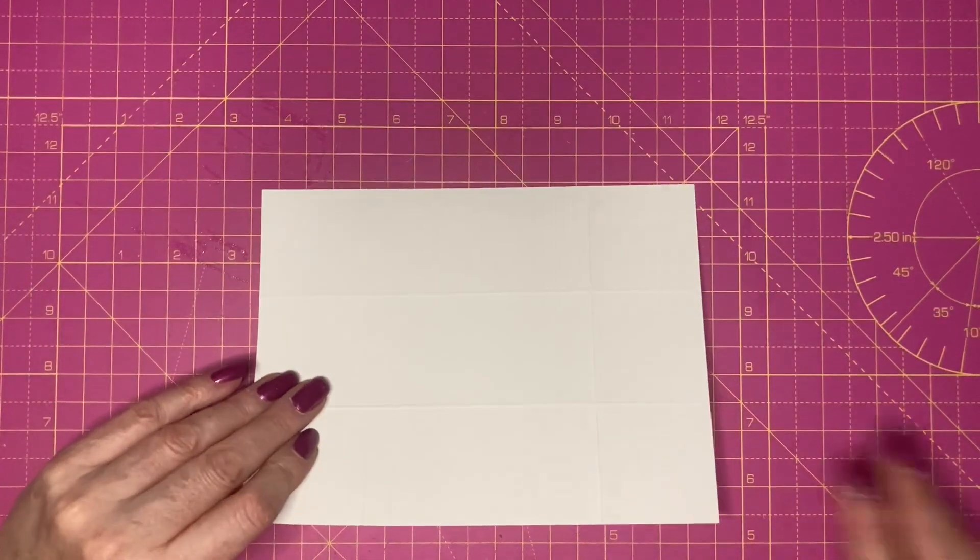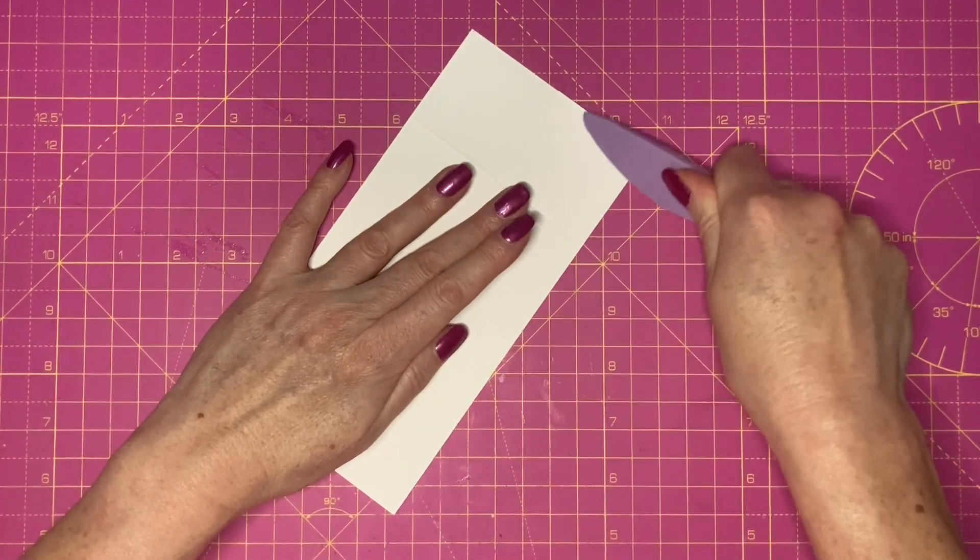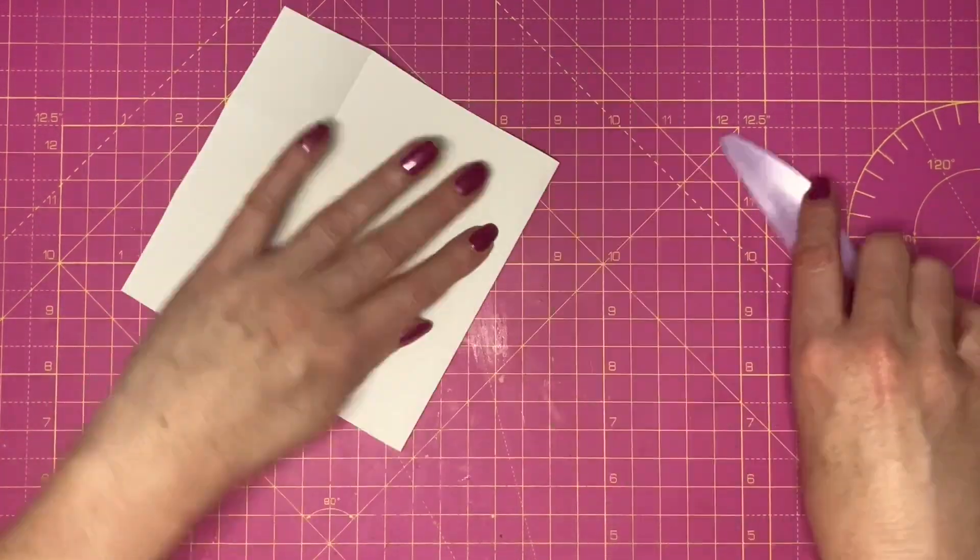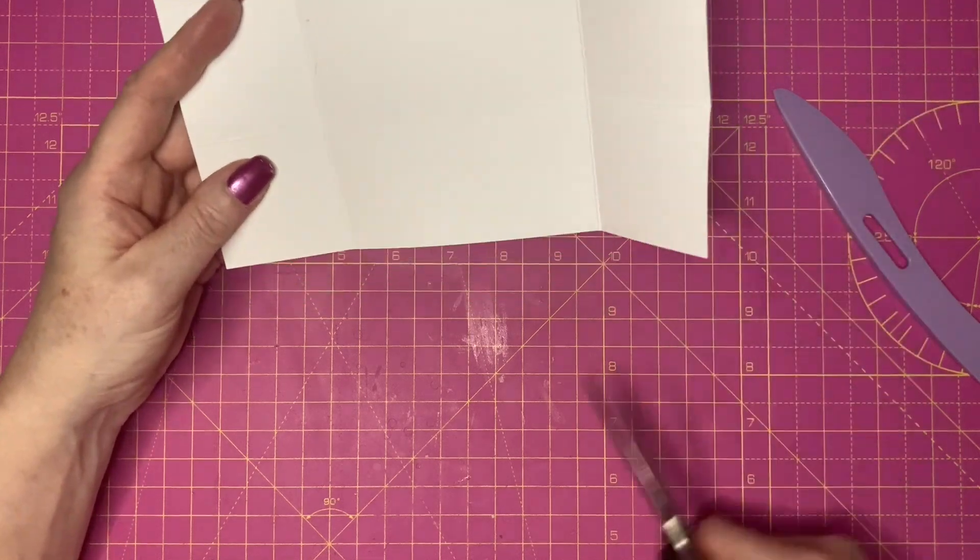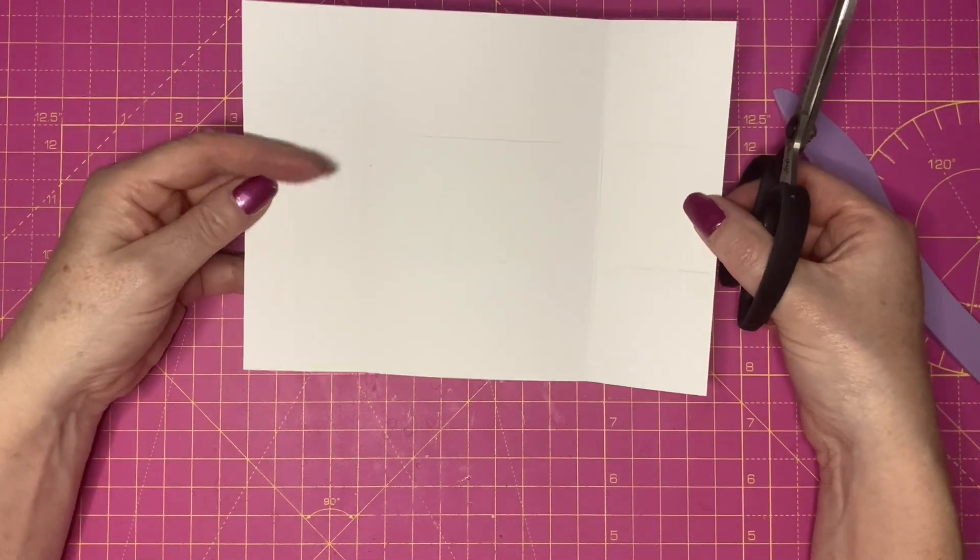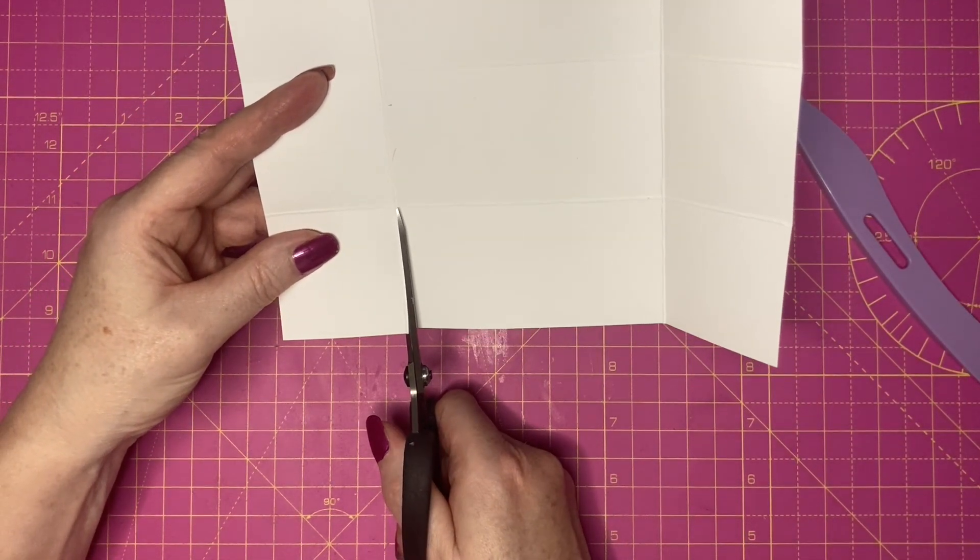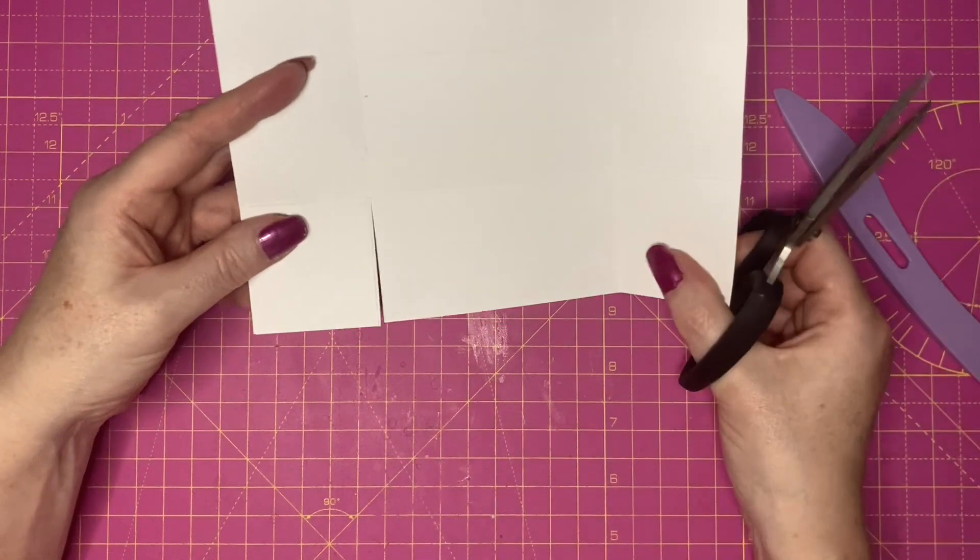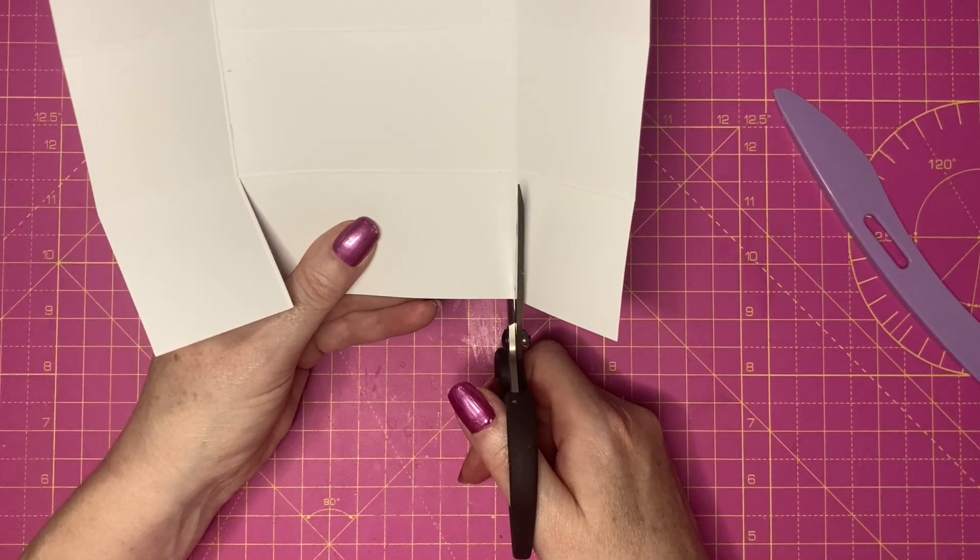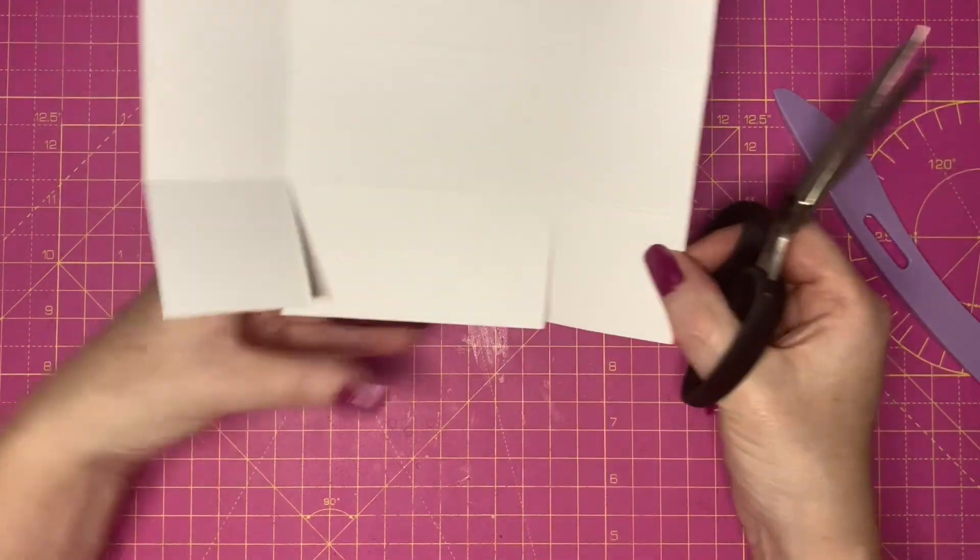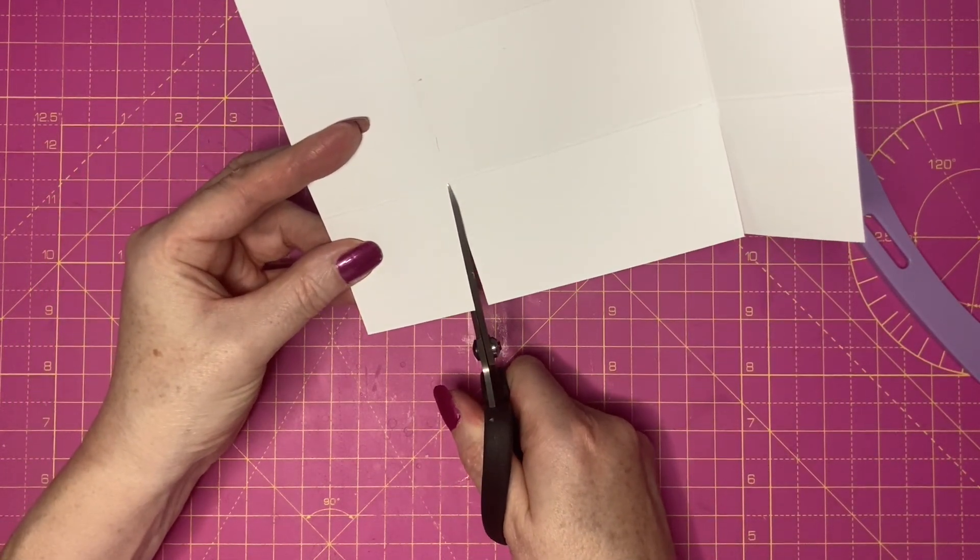We'll start with the base piece. Fold and burnish along all of the score lines. I've got my piece in landscape orientation and I'm going to cut up the first score line to the first horizontal, and cut up the second score line to the first horizontal. Then cut a wedge from each of the outer squares just to create our glue tabs.